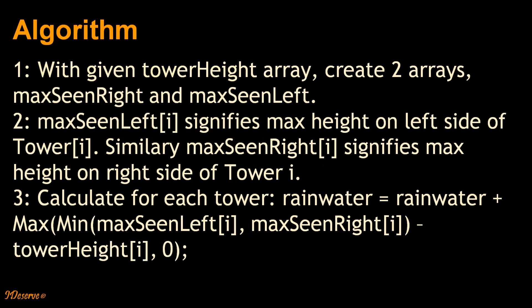So the algorithm is: with given tower height array, we create two arrays, maxSeenRight and maxSeenLeft. maxSeenLeft[i] signifies max height on left side of tower i. Similarly, maxSeenRight[i] signifies maximum height on right side of tower i.